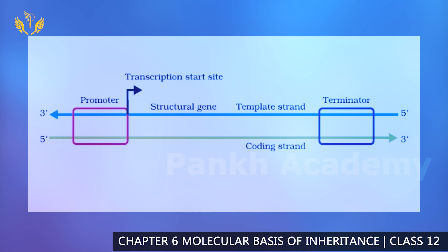The bottom strand is the coding strand. In front of the starting side there is a promoter — it promotes transcription. After the promoter there is a structural gene, and at the end there is a terminator, which ends the process. So we have: template strand, coding strand, promoter, and terminator.